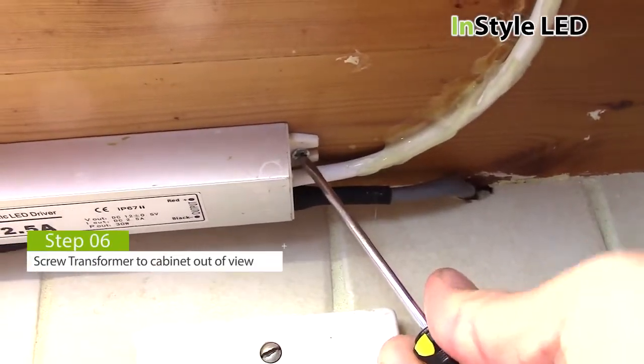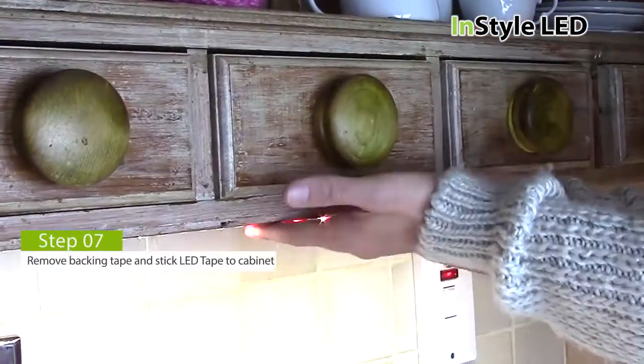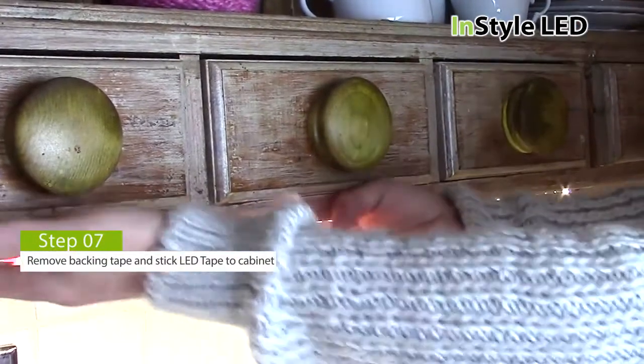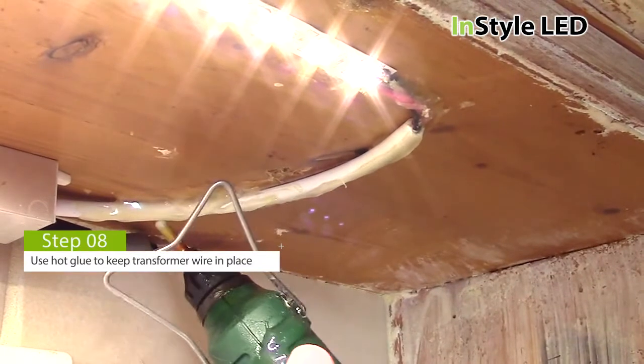Next screw the transformer to the cabinet. Next stick the LED tape into position. Then apply hot glue to keep the cable in place and hidden.